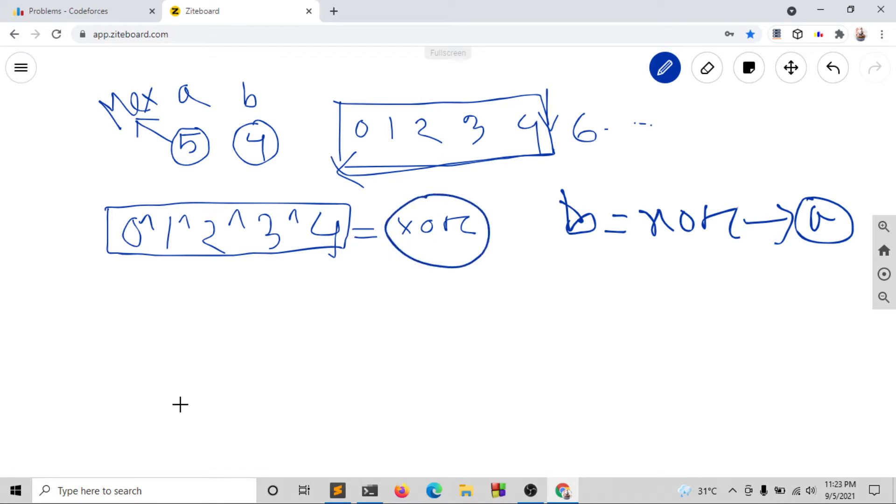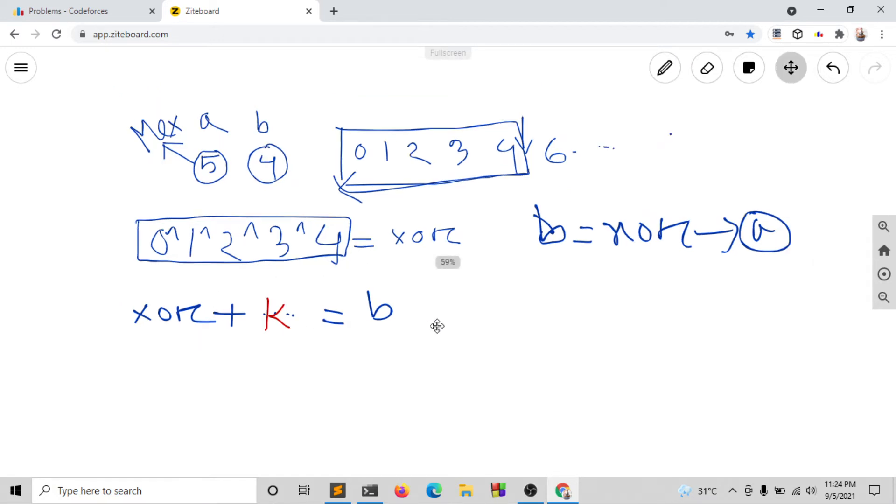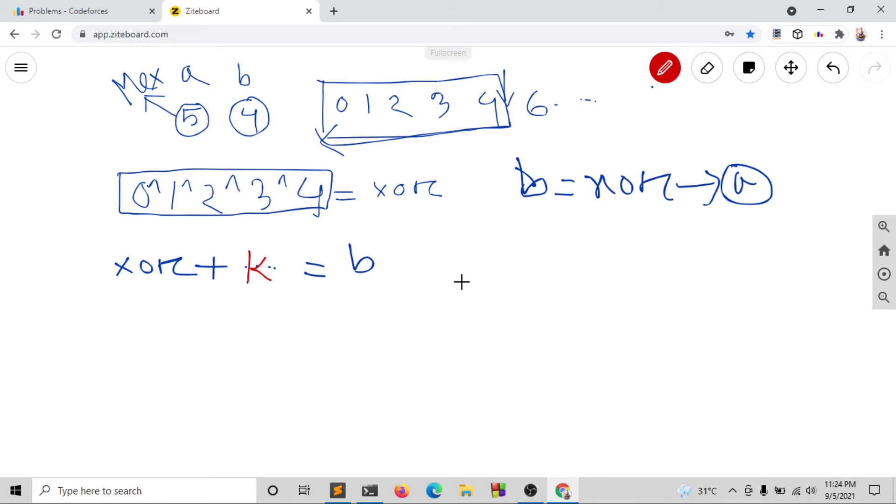Another key XOR property: if XOR equals A, then we can derive other values. The XOR operation is reversible. If XOR K equals B, then XOR of B equals K. Understanding these XOR properties is crucial for solving this problem.